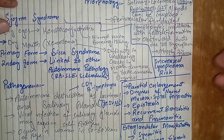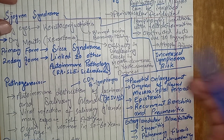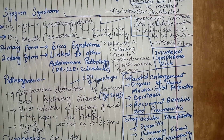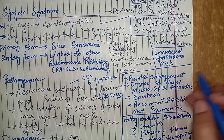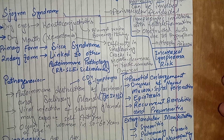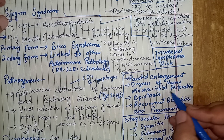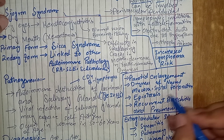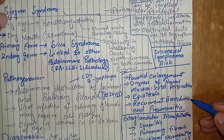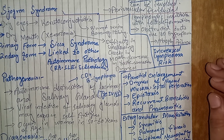There can be parotid enlargement due to the inflammatory attack and swelling. There can be dryness of the nasal mucosa when it attacks the respiratory tract. Dryness of the nasal mucosa can cause septal perforation, epistaxis (bleeding from the nose), and recurrent bronchitis or pneumonitis due to involvement of the respiratory mucosa.